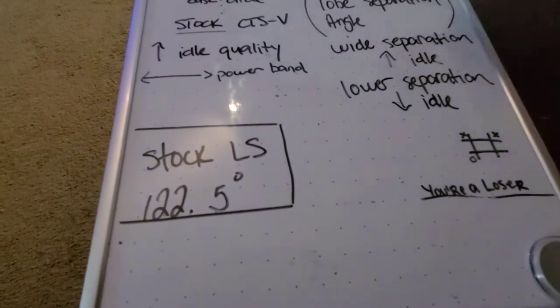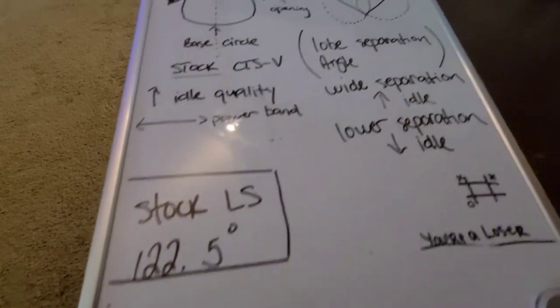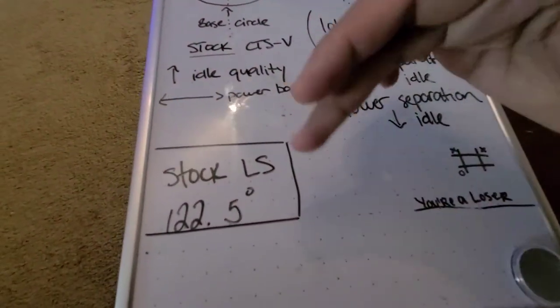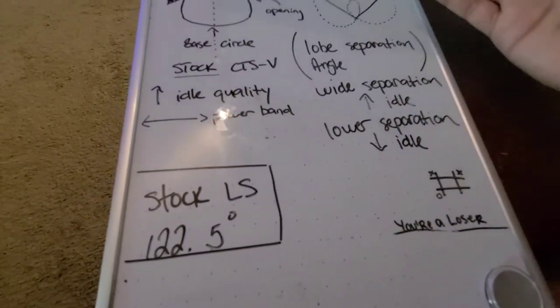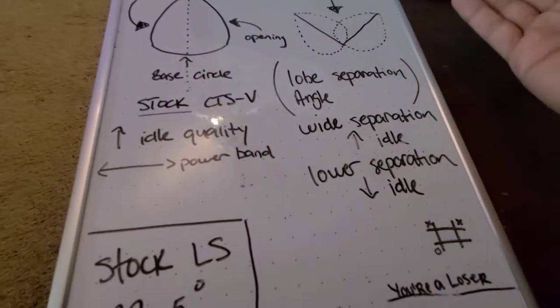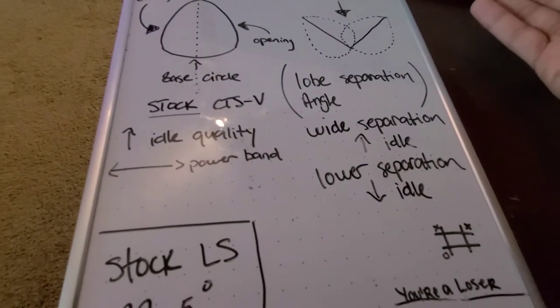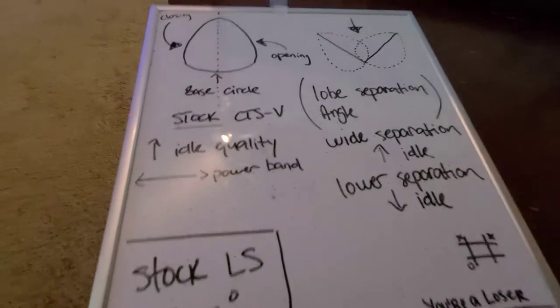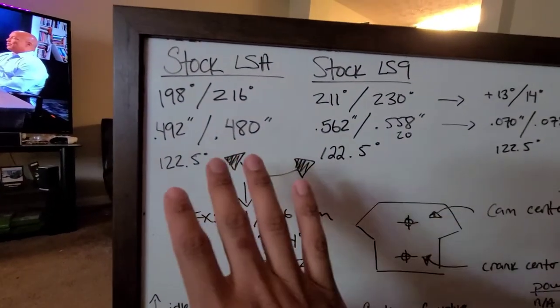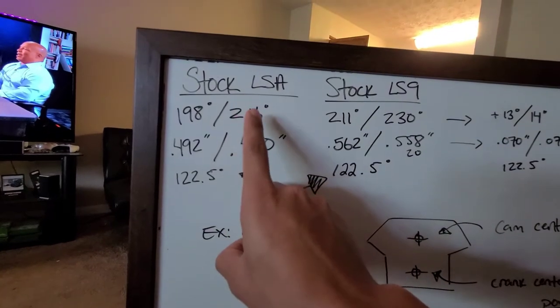Stock LS or LSA will usually be, for this specific example, for LSA it's 122.5 degrees of lobe separation angle. Great idle quality, the engine runs smooth. I'm not gonna try to get too much into the weeds about it, but these camshaft specs you can find them all. Some of this stuff I found on someone's website just to have for my examples here to show you pretty much what you're actually gonna be doing to the motor.